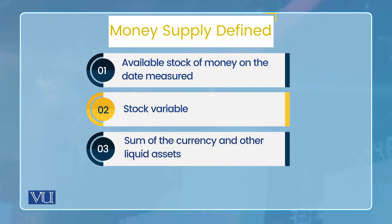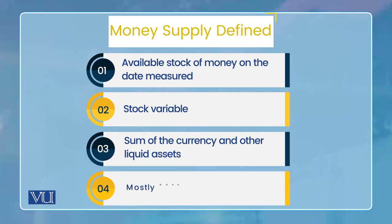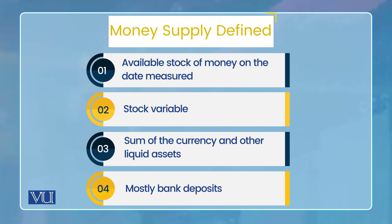Currency and other liquid assets. And other liquid assets jo hum mostly lete hain, woh bank deposits lete hain. So much so ke agar aap transferable deposits or checkable deposits lete hain, toh yeh M1 definition ban jayegi currency ke saath mein lete hain.